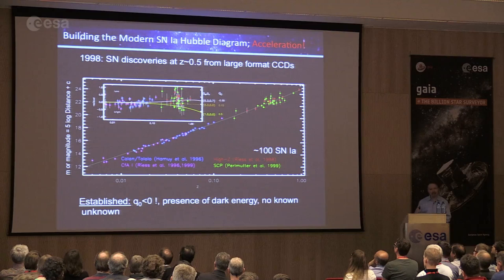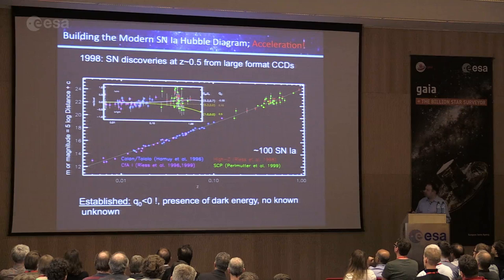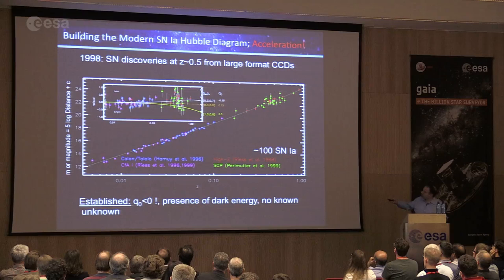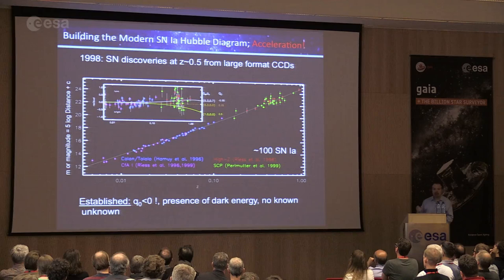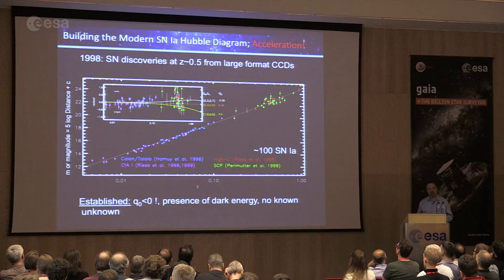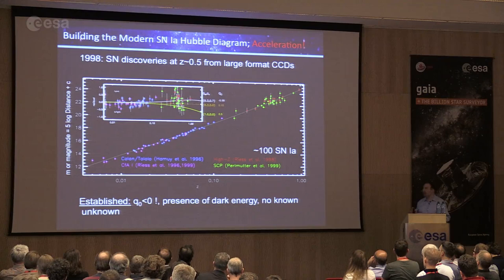By the late 1990s, two teams — one led by Saul Perlmutter at Lawrence Berkeley Lab and our High-Z Supernova Team led by Brian Schmidt — set out to find Type Ia supernovae at much greater redshifts, around 0.5. Subtracting a low-mass universe model, we saw that the supernovae were significantly fainter — more distant — than expected. The universe was not decelerating; the data went the other way, implying the universe was actually accelerating.